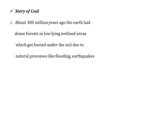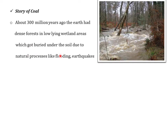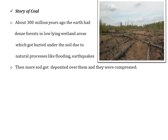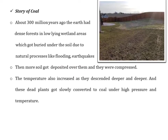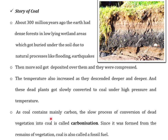So how is coal formed? About 300 million years ago the earth had dense forests in low-lying wetland areas. These forests got buried under the soil due to natural processes like flooding or earthquakes. More and more soil got deposited over them and they were compressed. The temperature also increased as they sank deeper and deeper, and due to high temperature and pressure these dead plants got slowly converted to coal. Since coal contains mainly carbon, this slow process of conversion of dead vegetation into coal is called as carbonization. And since coal was formed from the remains of vegetation, coal is said to be a fossil fuel.